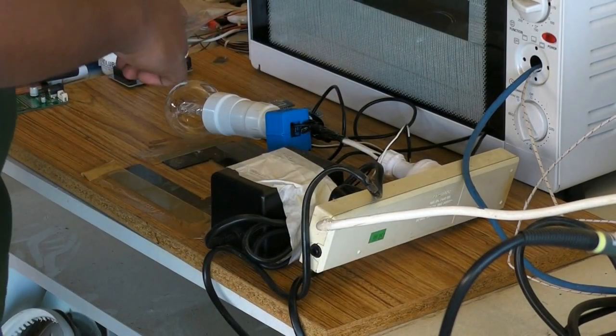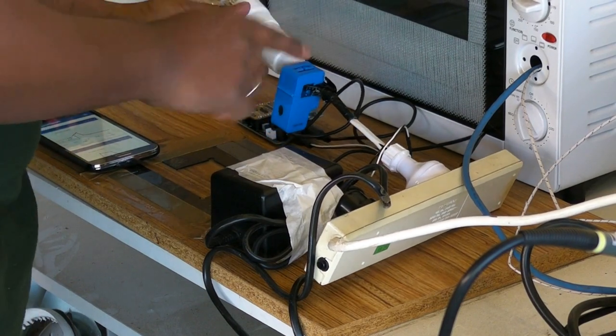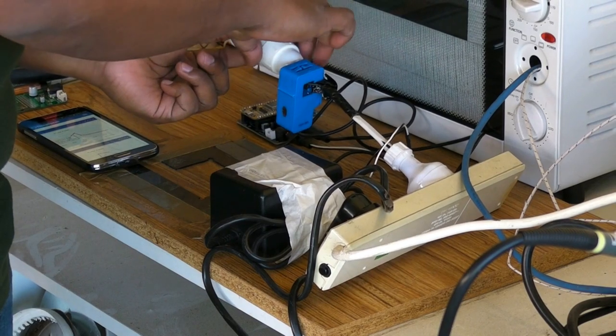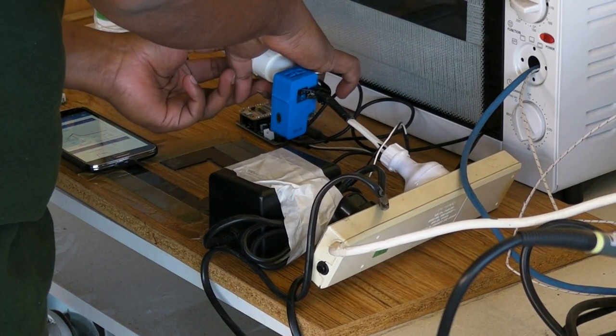So remember when you put on the current clamp, put either on the neutral or the live, not across both wires. I'm going to now turn on the lamp.